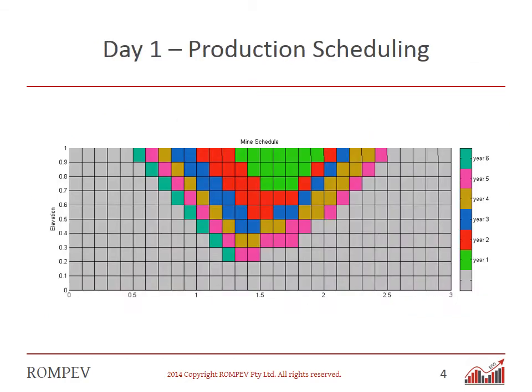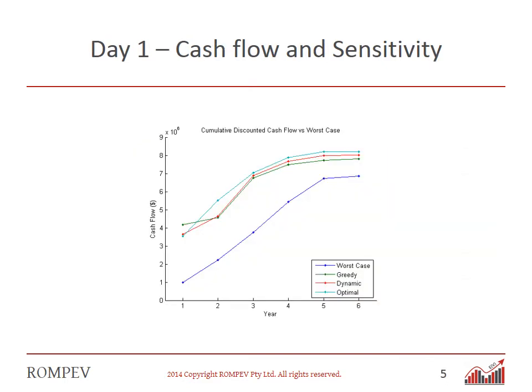Production scheduling is then considered. Given mining and milling capacities, together with prices and costs, how should the blocks be extracted to maximise present value? Several optimisation approaches are contrasted. Once the production schedule is obtained, the results are summarised in a cash flow analysis, which is then investigated more thoroughly with a sensitivity analysis.